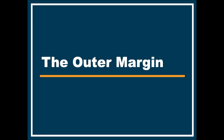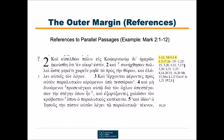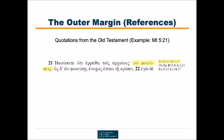Before getting lost in the apparatus, let's have a look at the references in the outer margin of the text. There are three kinds of references. First, the reader is pointed to parallel passages elsewhere in the New Testament. The prime example for this are the references to parallel pericopes in the Gospels. The beginning of Mark 2 with the story about the healing of the paralyzed man can also be found in Matthew and Luke. This kind of reference is shown in bold typeface. The second type are direct quotations from the Old Testament — in Matthew 5 verse 21, for example, Jesus quotes one of the Ten Commandments. These references are given in italic typeface, just like the respective words in the Greek text.